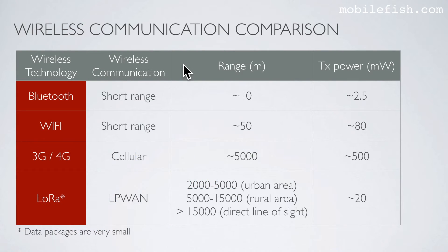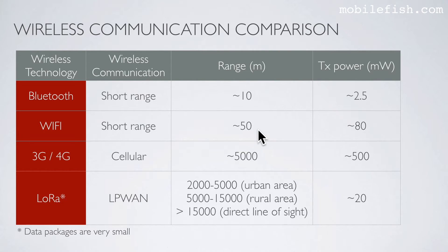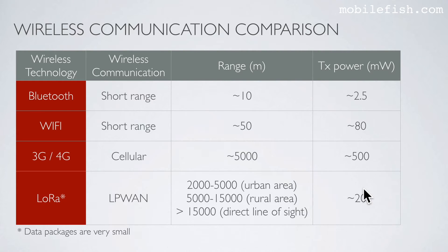To give you an idea of how these wireless technologies compare to each other, here is Bluetooth, Wi-Fi, 3G and 4G, and LoRa. Bluetooth and Wi-Fi have clearly short ranges compared to cellular and LPWAN. But as you can clearly see, cellular uses a lot of transmission power compared to LoRa.